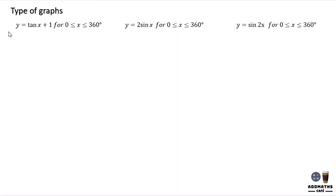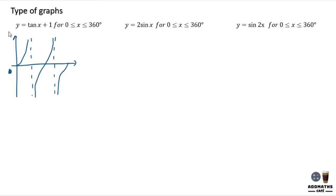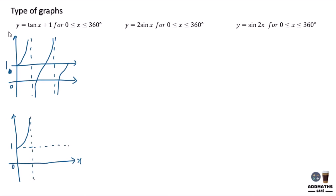Y equal to tangent x plus 1. Your original tangent x was starting with 0. Plus 1 will make your 0 become 1, and your 0 will be at the lower side. So this is your new tangent x with 0 on the bottom and 1 on the top. Your 90-degree asymptote is this line, then pass through 180 degrees here, and end it with 360 degrees here. Always remember not to draw this graph incorrectly.